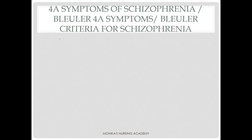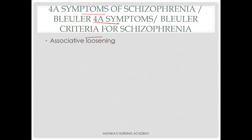Next we will discuss the 4A symptoms of schizophrenia, also known as Bleuler's 4A symptoms. This is an important topic for exams — questions come asking 'all of the following are Bleuler's 4A symptoms of schizophrenia except' — so these are the 4As: associative loosening, autism, ambivalence, and affect inappropriate.